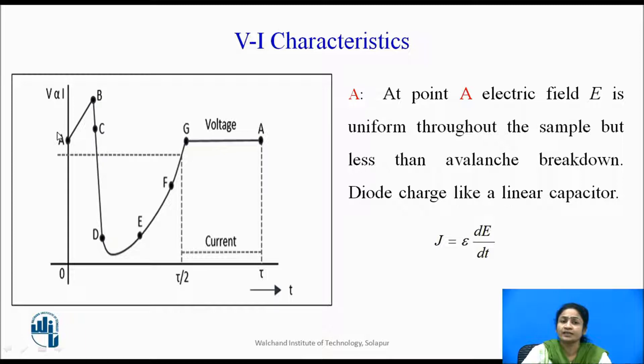At point A, the electric field is uniform throughout the sample, that is throughout the diode. But the electric field is less than the avalanche breakdown voltage. So they act as a normal diode, and the diode charges like a linear capacitor.